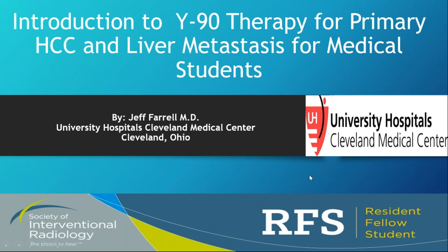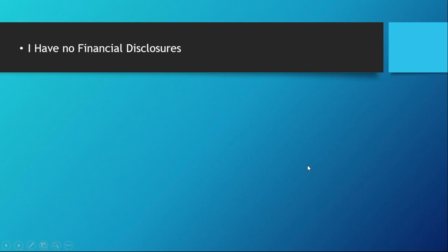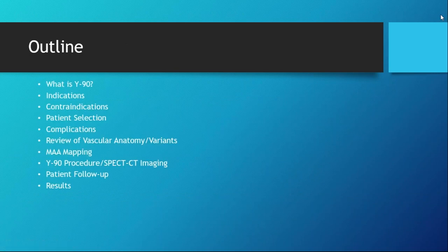So let's begin. I have no financial disclosures. Here is a brief outline of the webinar: we're going to discuss what exactly is Yttrium-90, indications, complications, review of vascular anatomy and variance, MAA mapping, the Y90 procedure itself, SPECT CT imaging and its role in the Y90 procedure, patient follow-up, and results.